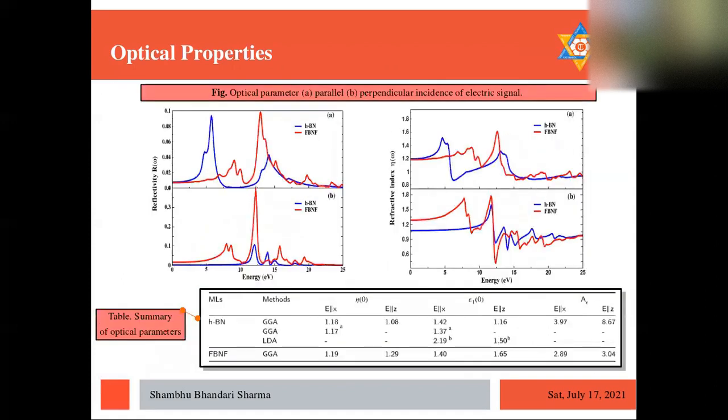And now we can see the final optical parameter that are reflectivity and refractive index. We can see that the reflectivity is significantly more and pronounced especially for fluorinated structure in both incidence of both kind of mode of incidence of light.